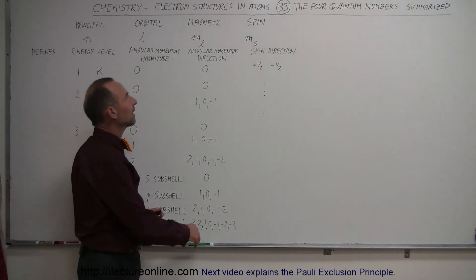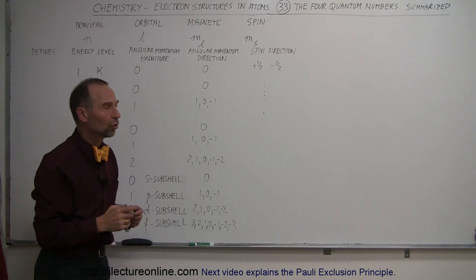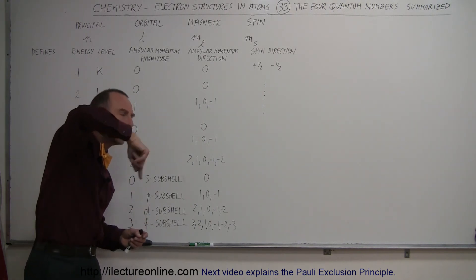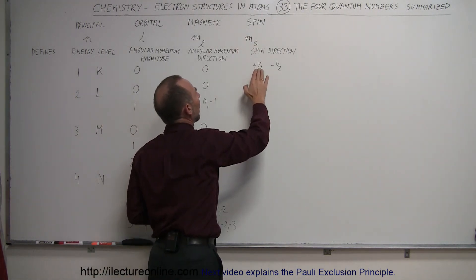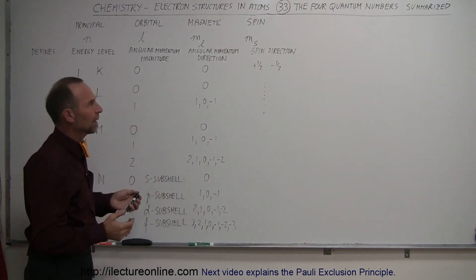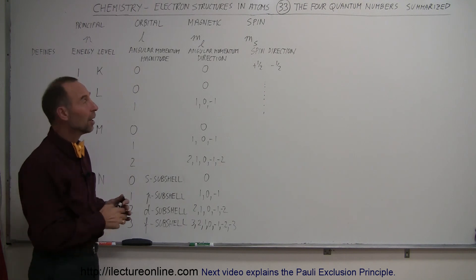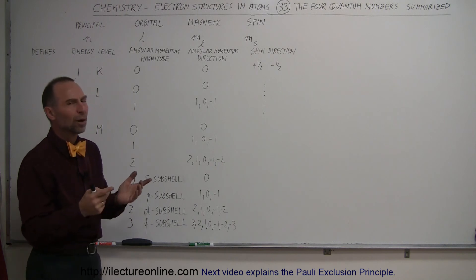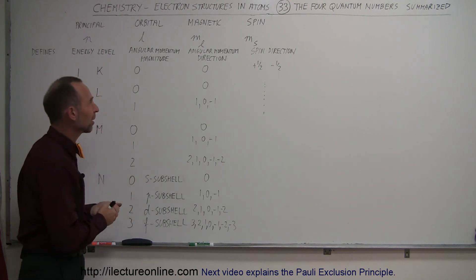Finally, each electron can have a spin-up or a spin-down orientation. Electrons spin on their axis and can either be spin-up or spin-down. For spin-up, we associate the spin quantum number with positive one-half; for spin-down, we associate it with negative one-half. This is just a mathematical representation meaning one is spin-up and the other is spin-down. It's this property that allows two electrons to exist in each orbital — otherwise there would only be room for one electron in each orbital, and we would have a very different universe.